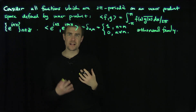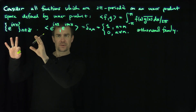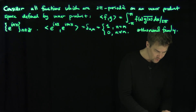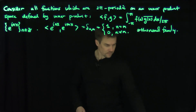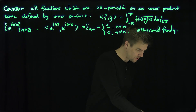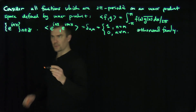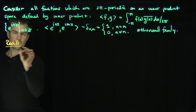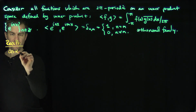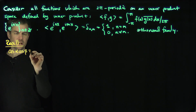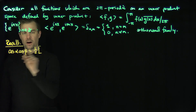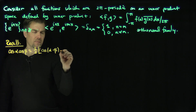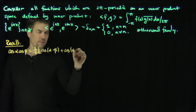I want to derive the same sort of orthogonality relationships for sine and cosine. I can use these trigonometric functions to do it, but let's also do it from first principles using the product-to-sum formulas. Recall that cosine(α)cosine(β) equals one-half of cosine(α − β) plus cosine(α + β).